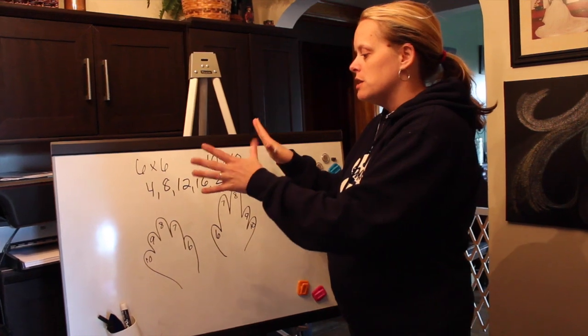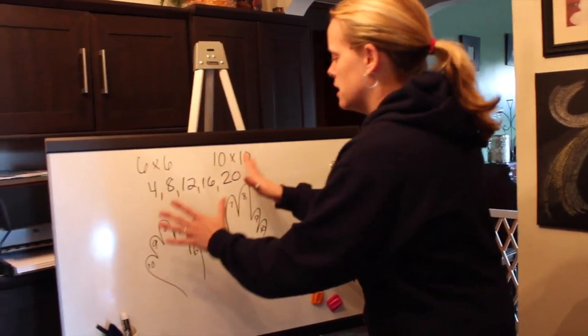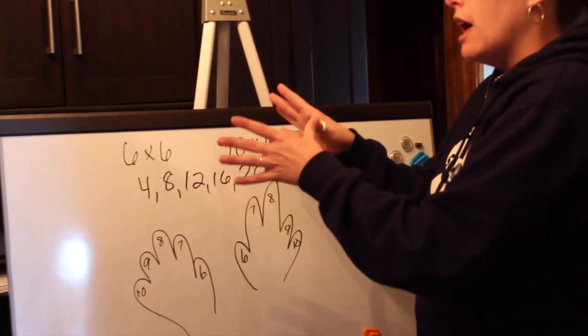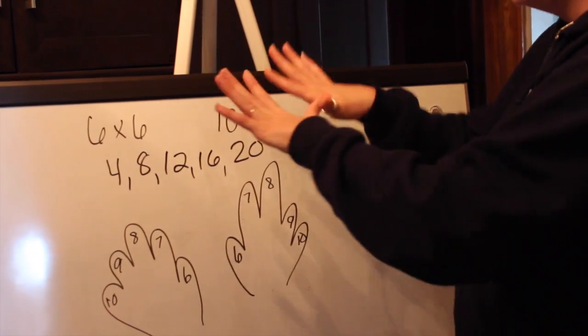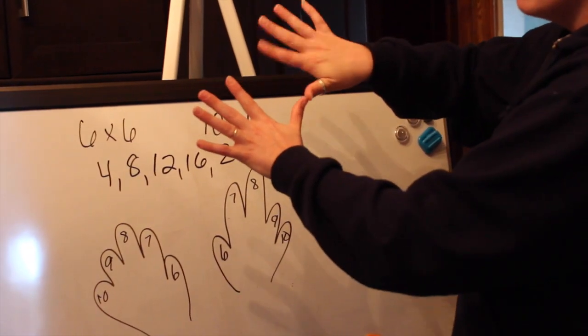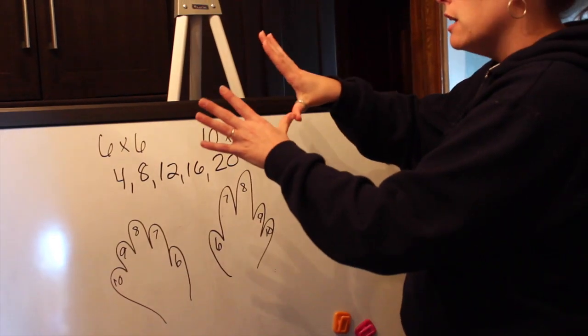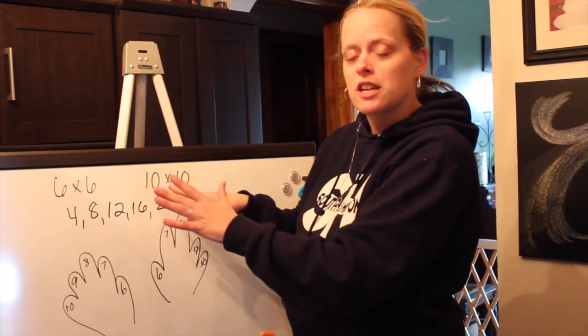And so what you're going to do, for example, is if these are two 6's and you want to do 6×6, you take your 6 and your 6 together, and you count each of your thumbs. 10, 20, and then 4×4 is 16 because you have 4 fingers and 4 fingers. 4×4 is 16. So 10, 20, plus 4×4, which is 16, makes 36. So 6×6 is 36.